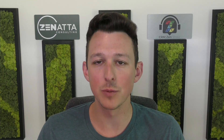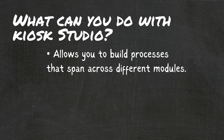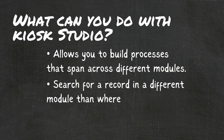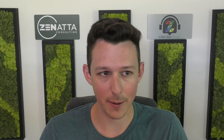Kiosk, if you don't know, is a process management tool inside of CRM that essentially allows you to build processes that span across different modules. The nice thing here is the ability to search for a record in a different module versus where you started, and being able to add these on homepages so they're easily accessible for your team.